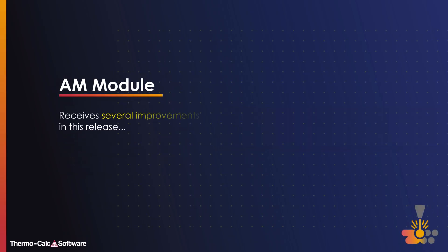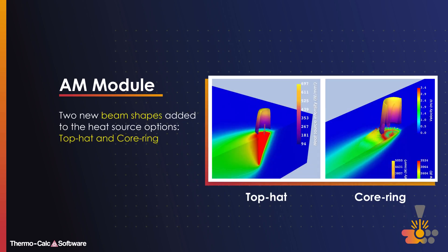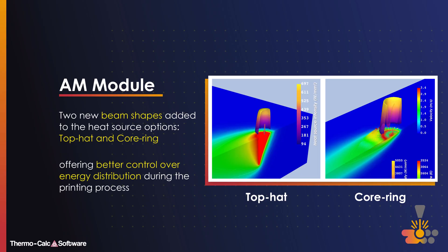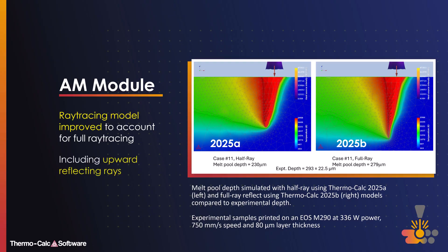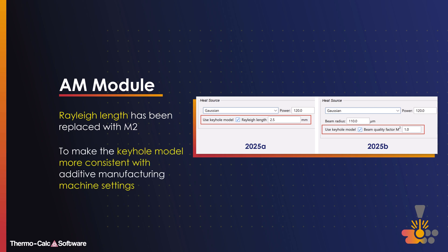The additive manufacturing module receives several improvements in this release. Two new beam shapes have been added to the heat source options — top hat and core ring — offering better control over energy distribution during the printing process. The ray tracing model has been improved to account for full ray tracing, including upward reflecting rays. Ray-lay length has been replaced with M2 to make the keyhole model more consistent with additive manufacturing machine settings.